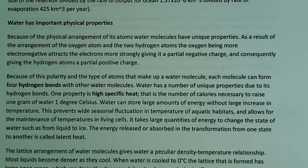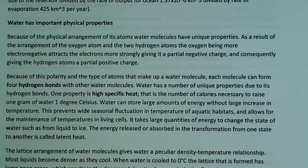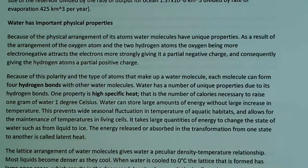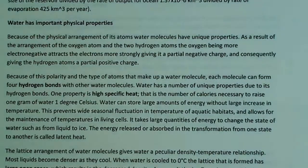Water has a number of unique properties due to its hydrogen bonds. One is high specific heat — the number of calories necessary to raise one gram of water one degree Celsius. This means water can store large amounts of energy without a large increase in temperature, so it takes a while to heat up. This prevents wide seasonal fluctuations in temperature of aquatic habitats, maintaining relatively stable water temperatures — unlike the drastic changes of terrestrial environments — which is important for living cells.